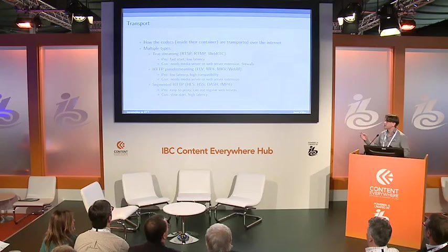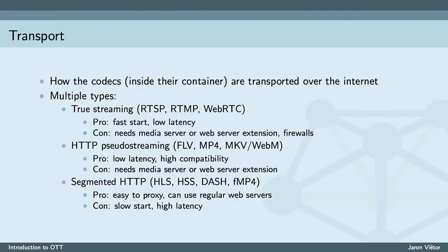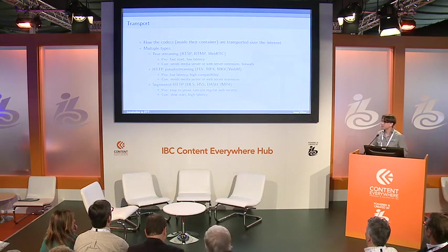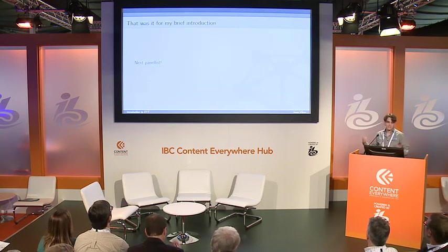Finally, we have segmented HTTP, which is the current dominant way to deliver media. This includes all the current buzzwords — HLS, DASH, and Fragmented MP4. These are essentially a folder of different video file segments, each containing a small section of the file — say 10 seconds at a time. This is extremely easy to proxy using normal web proxy servers and requires no media server. However, the big disadvantage is slow startup time and high latency. HLS in practice is between 20 and 40 seconds of delay, which is unacceptable for some use cases, and you will never get sub-second latency with these. That was my brief introduction — on to the next panelist, thank you.